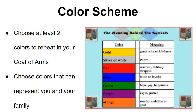The colors you use can be representational — for example, if you draw a basketball you might color it orange, or if you draw a football you might color it brown. But if there are things you don't want to make obvious colors, you can use the color meaning chart here to show other metaphors and symbolism for your family crest.